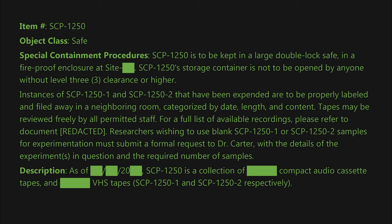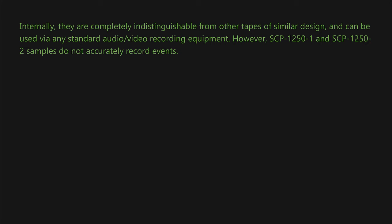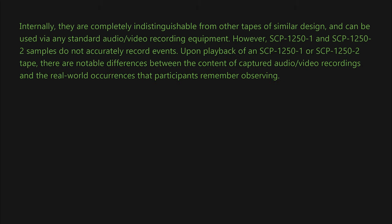Description, dated [REDACTED]/[REDACTED]/20[REDACTED]: SCP-1250 is a collection of [REDACTED] compact audio cassette tapes and [REDACTED] VHS tapes — SCP-1250-1 and SCP-1250-2 respectively. SCP-1250-1 and SCP-1250-2 samples are ashen in color and devoid of any form of branding or labels. Internally, they are completely indistinguishable from other tapes of similar design and can be used via any standard audio/video recording equipment. However, SCP-1250-1 and SCP-1250-2 samples do not accurately record events.